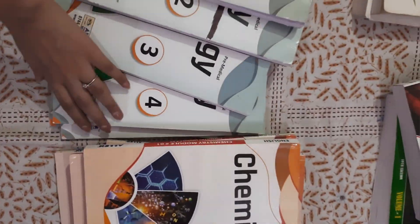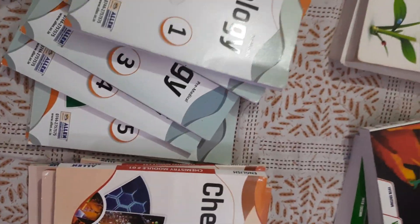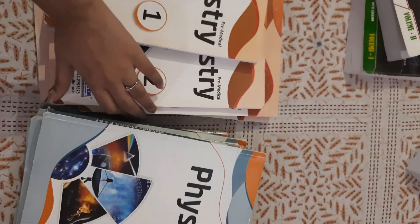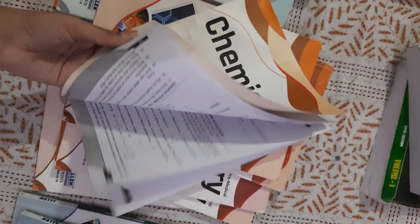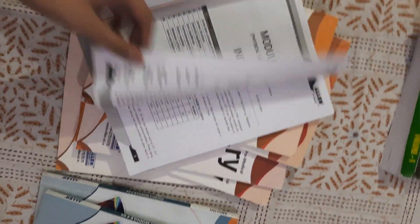For biology question practice, I don't use any such books. Then we have Allen ki modules, which I ordered at the beginning of 12th, like 2 months after 12th started. I'm using these now for my preparation for physics and chemistry. For bio, I use the Memonit app.